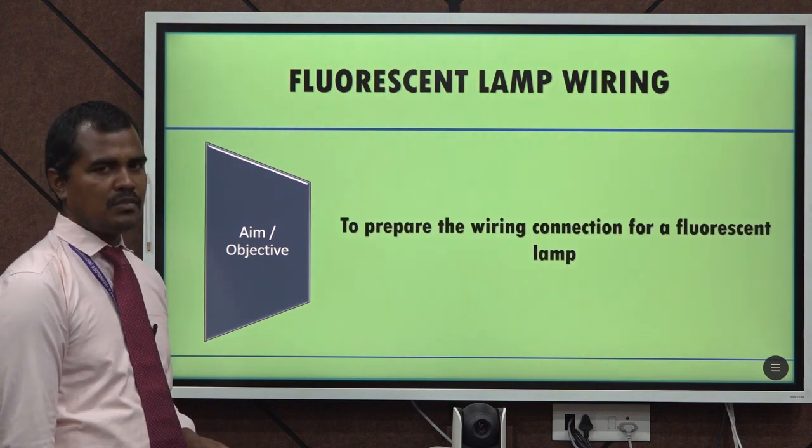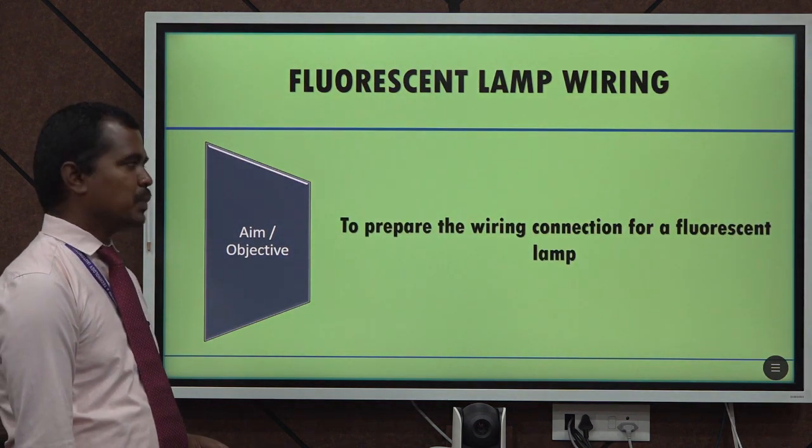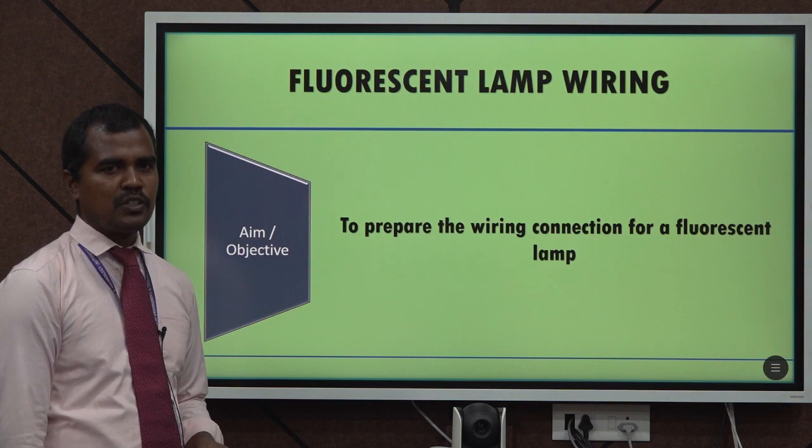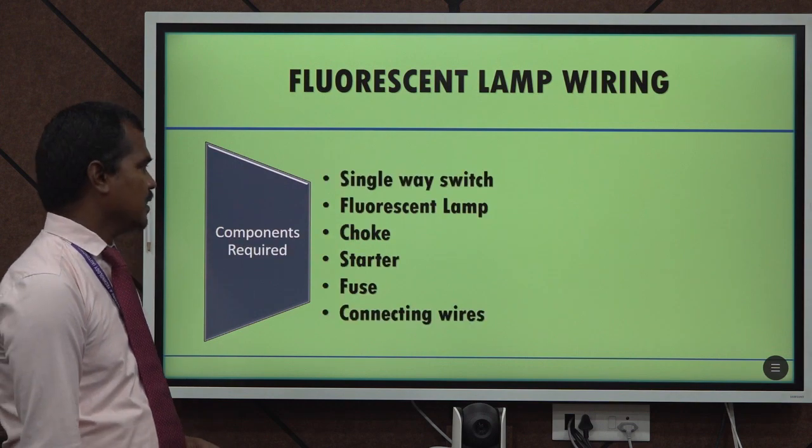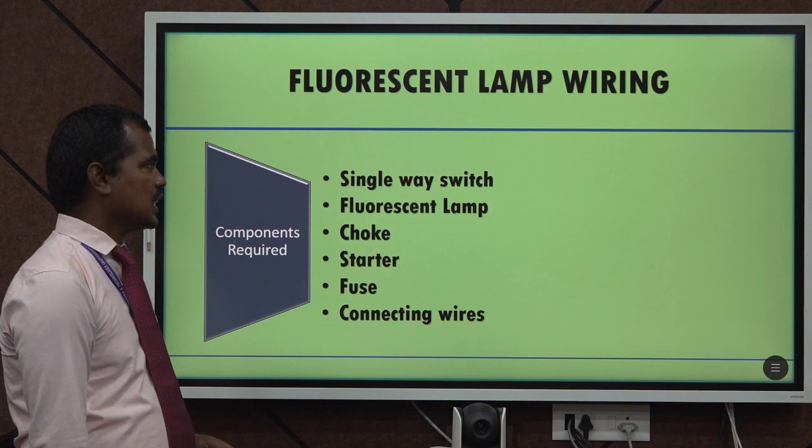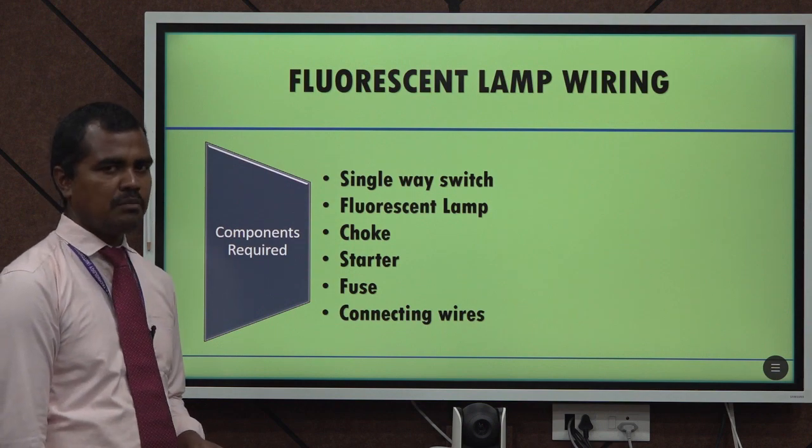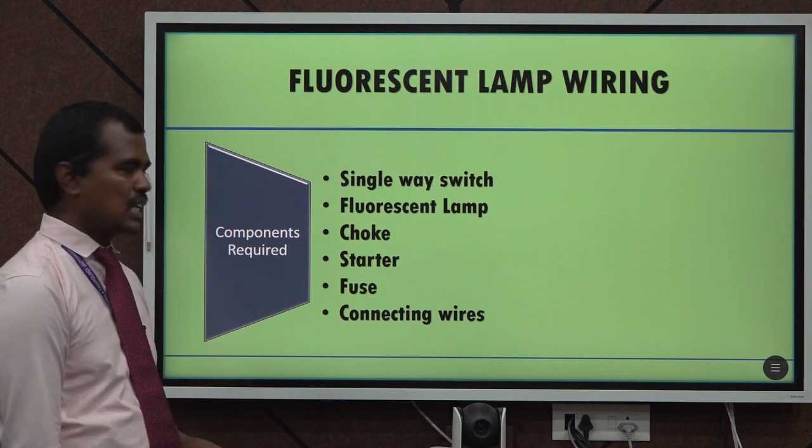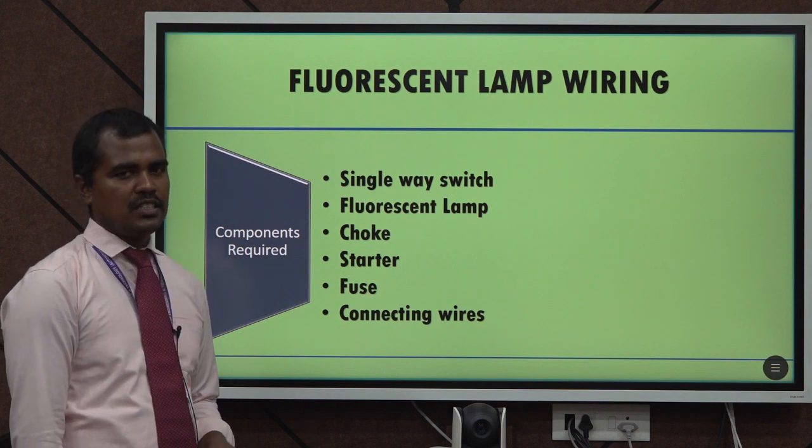So what is the aim or objective? To prepare the wiring connection for a fluorescent lamp. And these are all the components required: the single way switch, fluorescent lamp, choke, starter, fuse and some connecting wires.